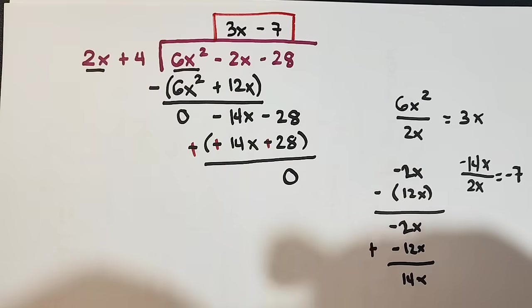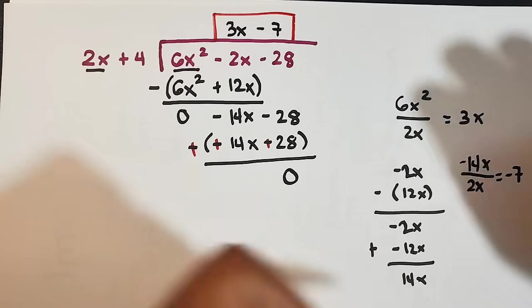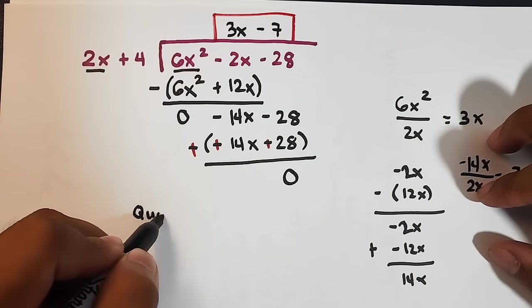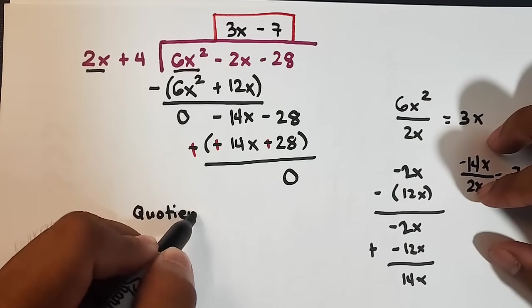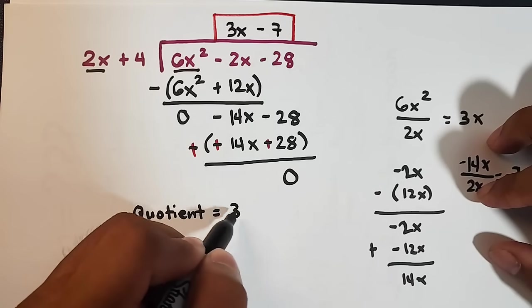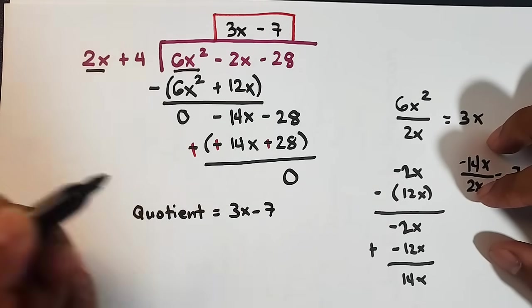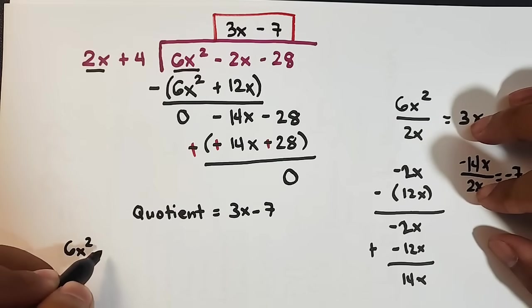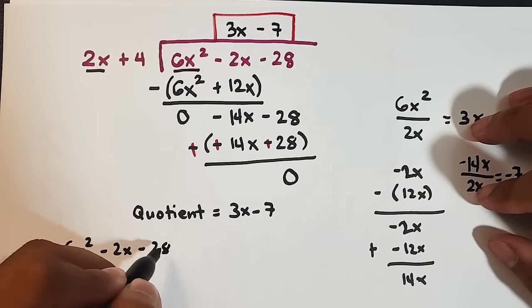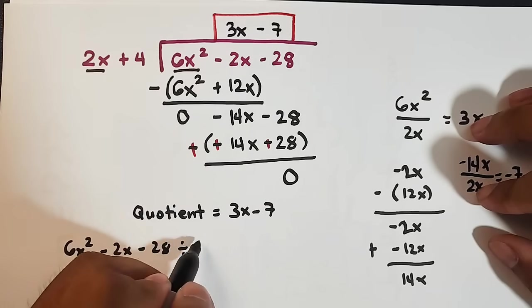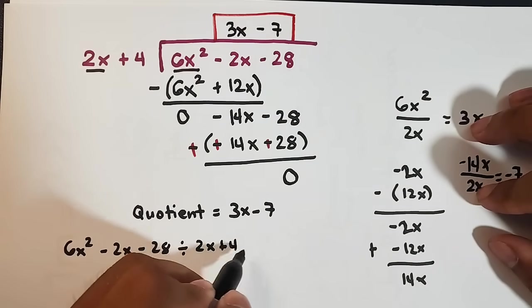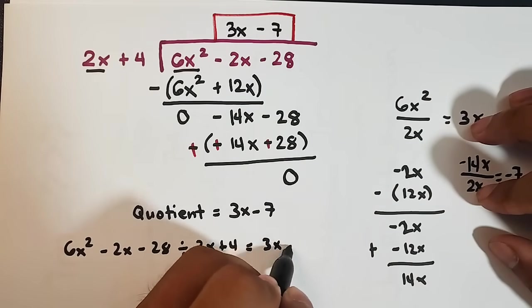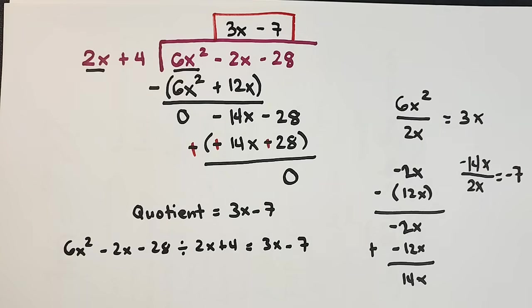The quotient is equal to 3x minus 7. Or, what we will do here is that we have 6x square minus 2x minus 28 divided by 2x plus 4 is equal to 3x minus 7. And that's it guys. So let's continue solving the next problem.